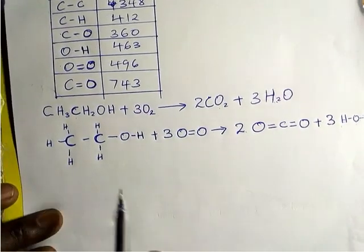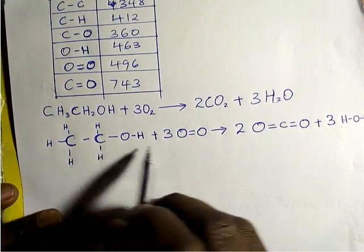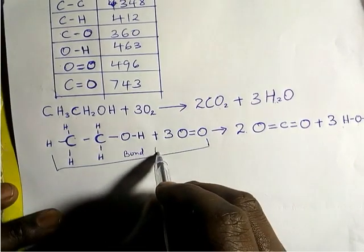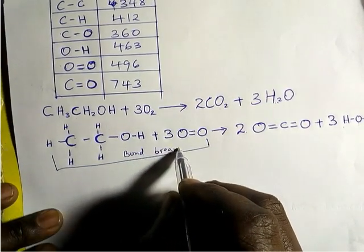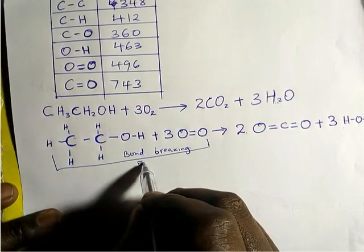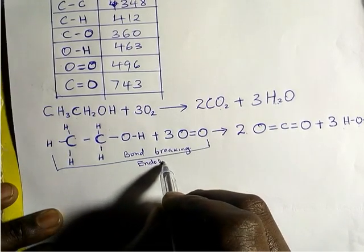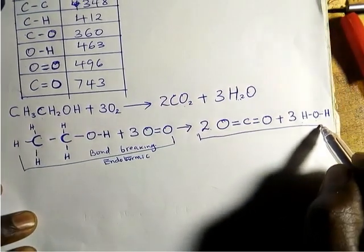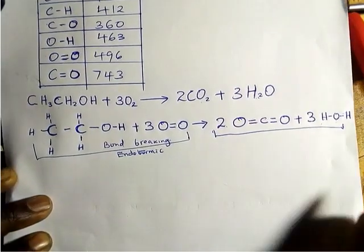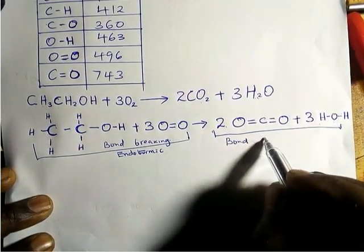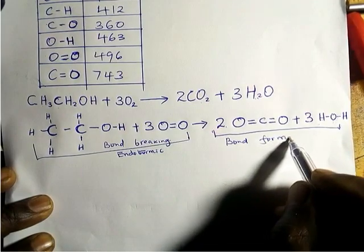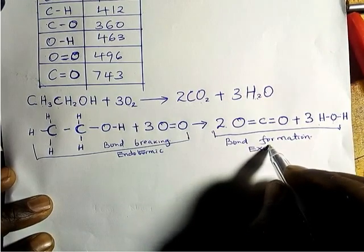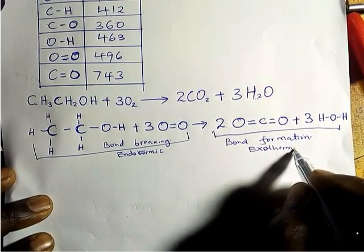On the left side of the equation, before the arrow, is bond breaking energy. Bond breaking is always endothermic. After the arrow, on the right side, we have bond formation energy. Bond formation is always exothermic.